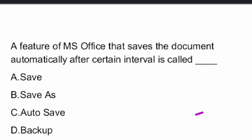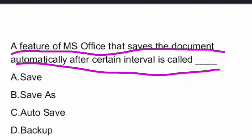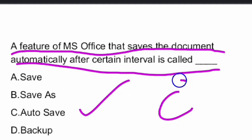The first topic in computer basics is MS Office. First question: A feature of MS Office that saves the document automatically after a certain interval of time is called. The answer is Option C — AutoSave.